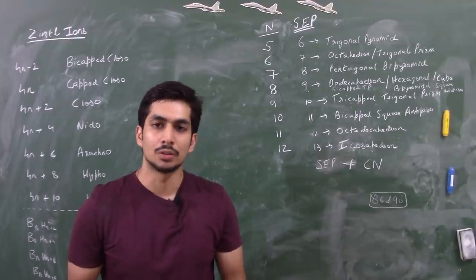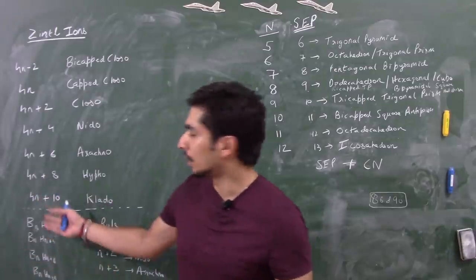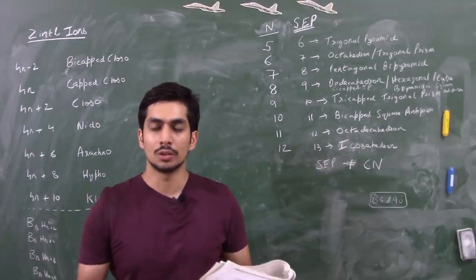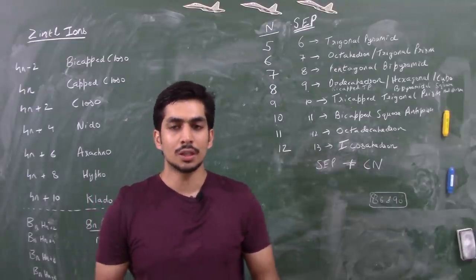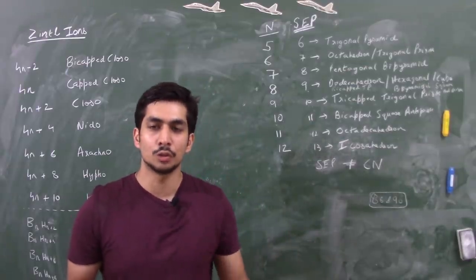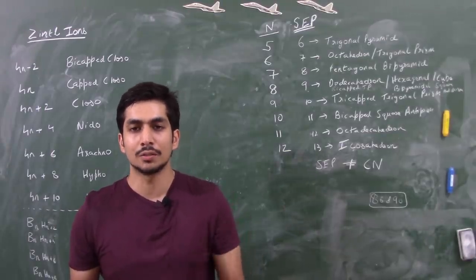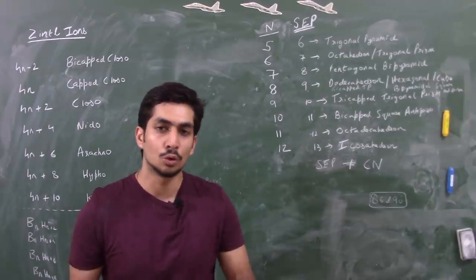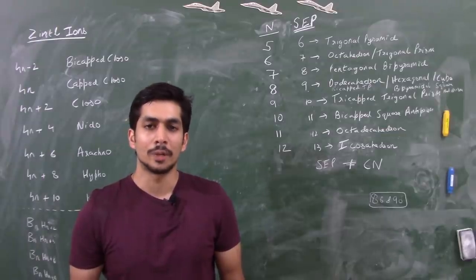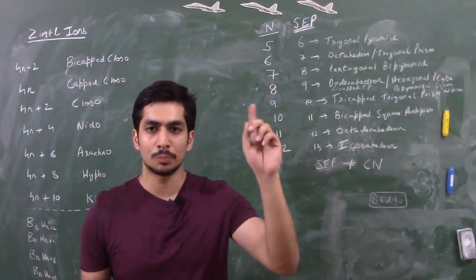For transition metals we have polyhedral skeletal electron pair theory, Wade's rule, then the 4n rule for Zintl ions, the MNO rule, Jemmis's rule, Mingos's rule - there are tons of rules for clusters and you tend to get very confused. In my last video on Mingos's rule many of you still had a lot of confusion, as you can see from the comments. I also made a video on metal-metal bonds - how to find their number - which was quite easy.